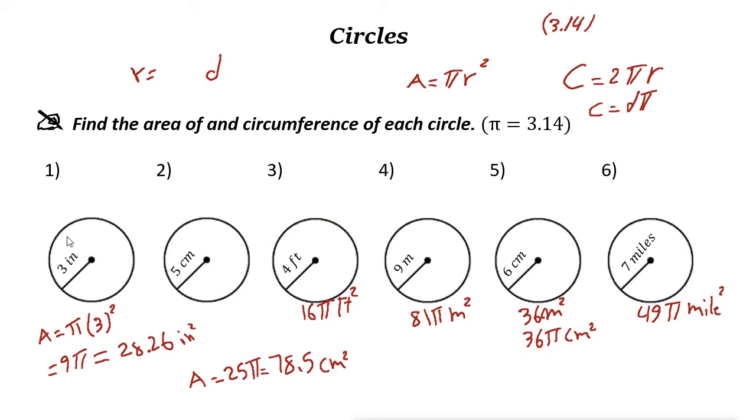Now let's find the circumferences. Circumference is 2 pi R. Here R is 3, so 2 times 3 is 6 pi inches. This one is 10 pi centimeters. This one is 8 pi feet. This one is 18 pi meters. This one is 12 pi centimeters, and this one is 14 pi miles.